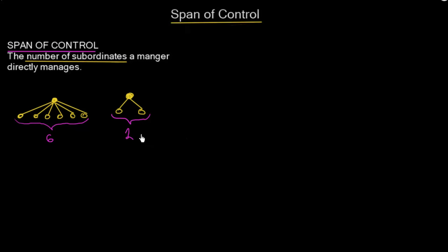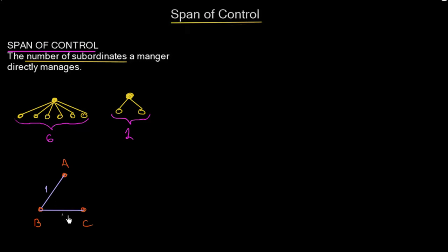Why is this so important? What makes such a big difference between two and six subordinates? Think about it this way: if we draw three people — person A, person B, and person C — how many relationships are among them? We have three relationships. So if I were a manager, I would have to manage these three relationships.